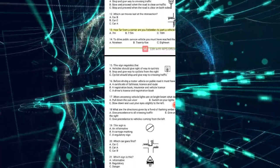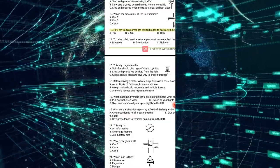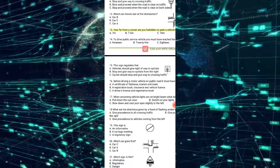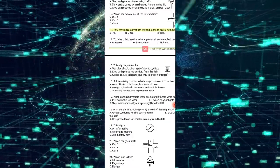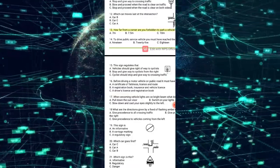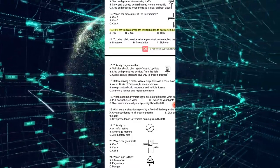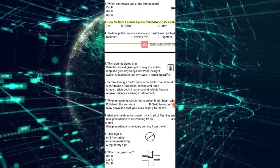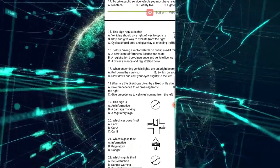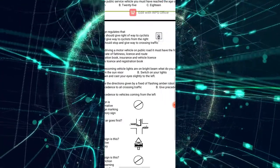Looking at the answers: A says 'vehicles should give right of way to cyclists' — not correct, as it's directed to cyclists. B says 'stop and give way to cyclists from the right.' C says 'cyclists should stop and give way to crossing traffic.' The correct answer for number 15 is C.